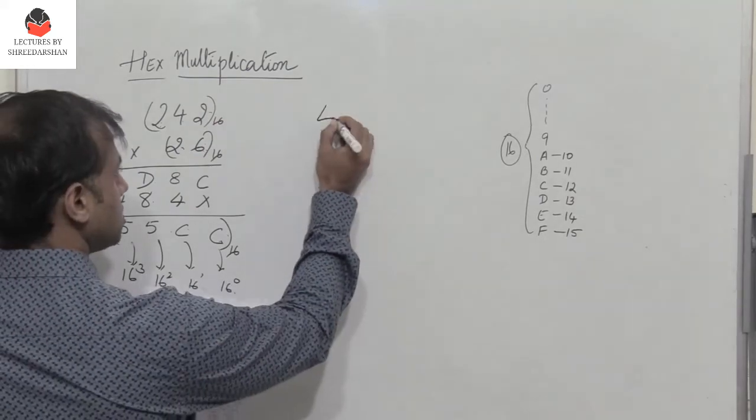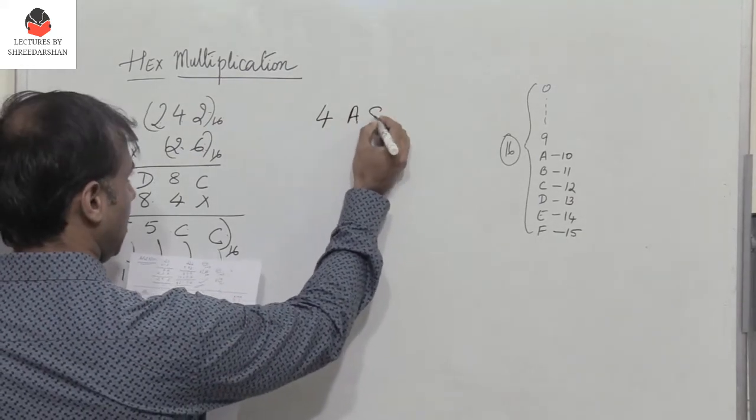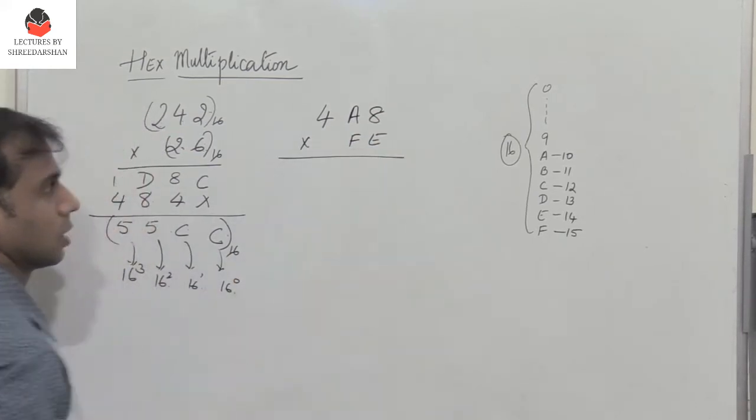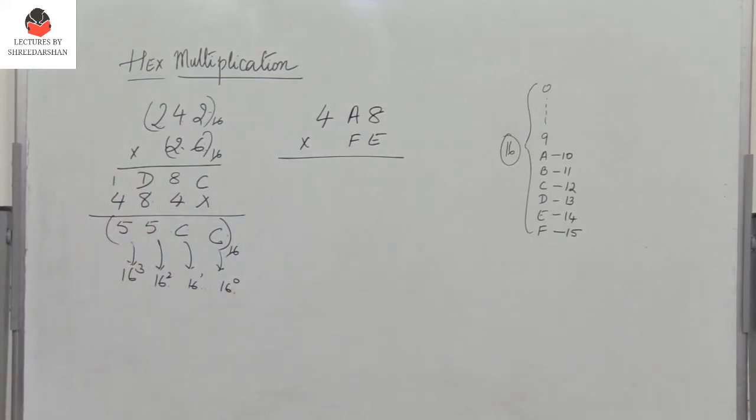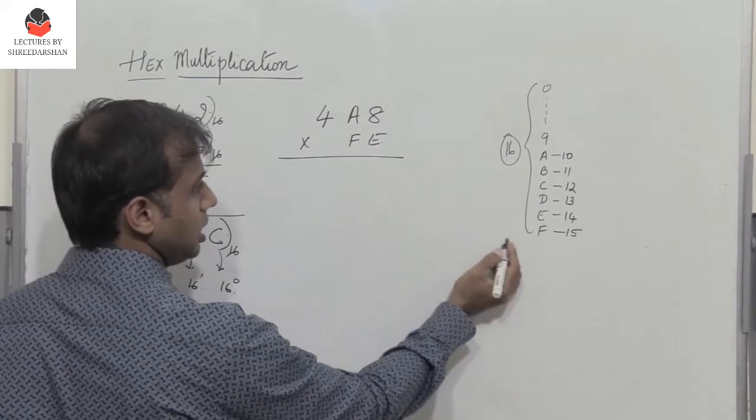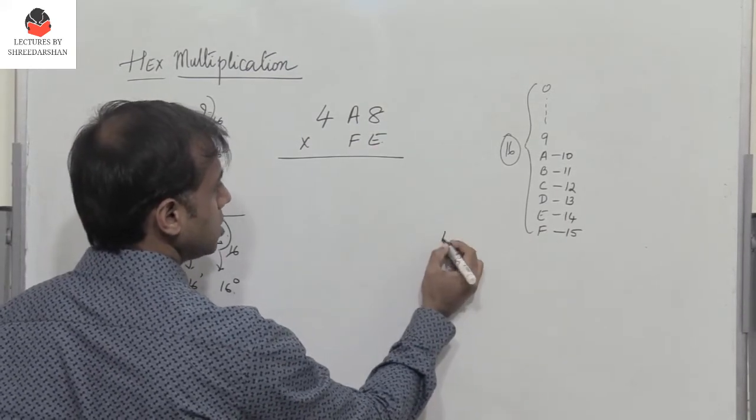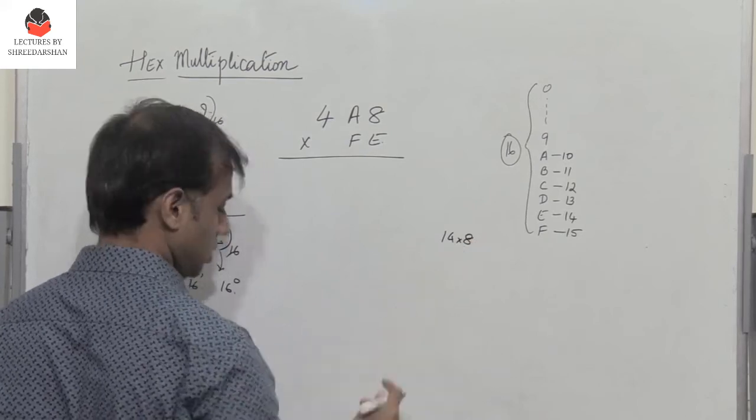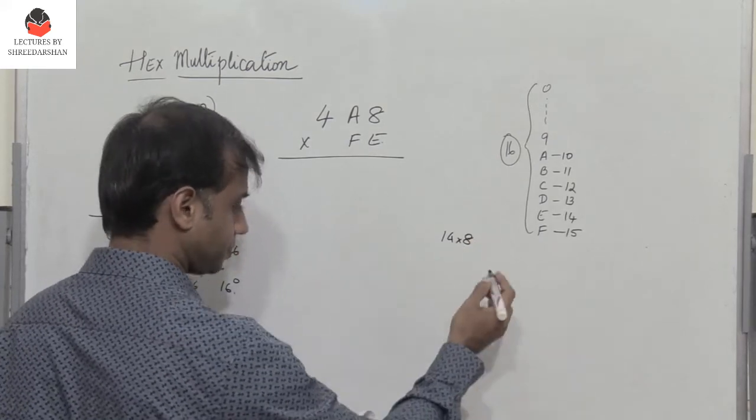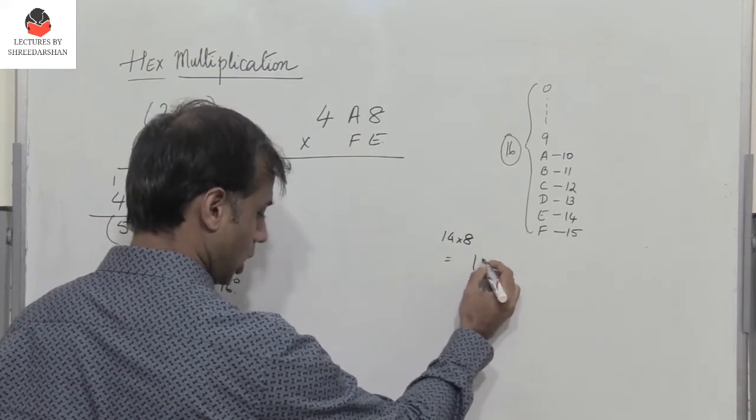Let's take another example. So I have 4A8 multiplied with FE. So let's see what happens here if you perform multiplication. So here I need to multiply E with 8. So E is 14. So what is 14 into 8? So 14 into 8 will give me a number which is 112.